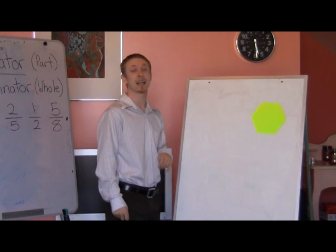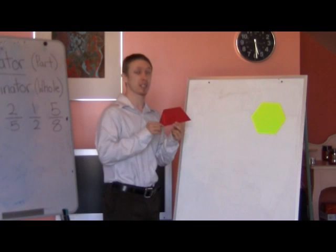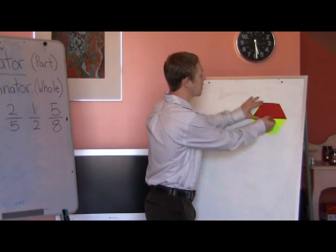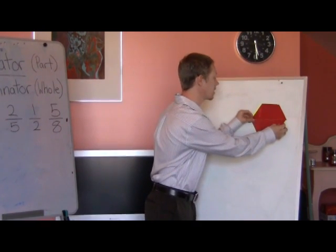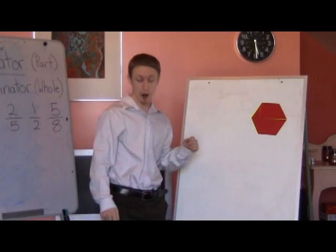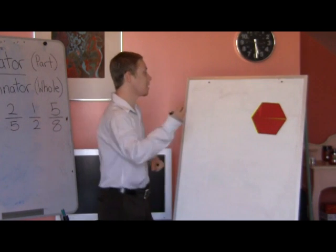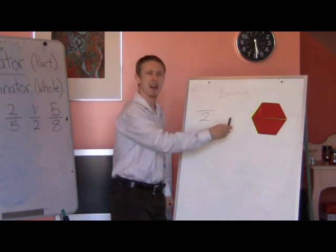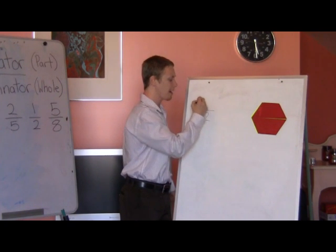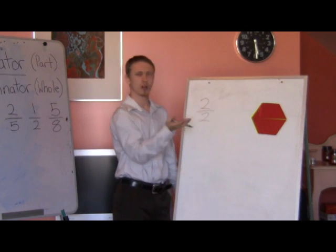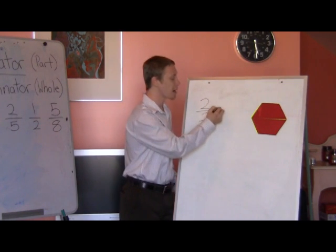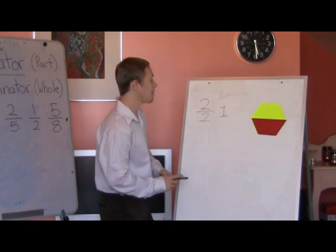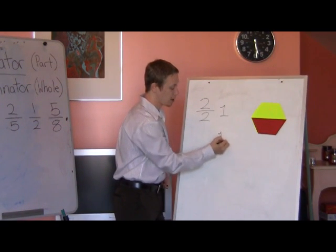If this yellow hexagon is our whole and I want to figure out what the red trapezoid is, first I would have to figure out how many trapezoids it takes to make up our hexagon whole. It looks like it takes two trapezoids to make up our whole hexagon. So two goes on the bottom as the denominator, and we're talking about two trapezoids as our parts — but two out of two, two halves, is the same as one whole, so we could just write one. Now if we were talking about one of these trapezoids, then we would have one half.